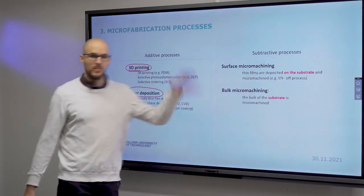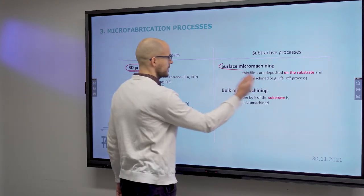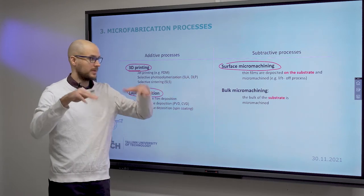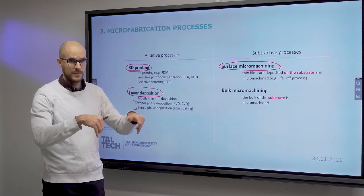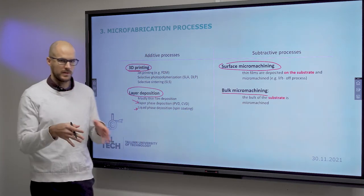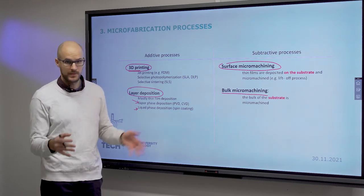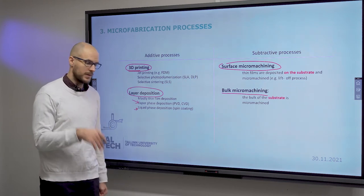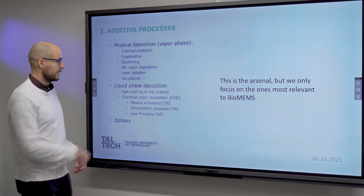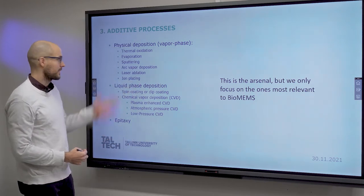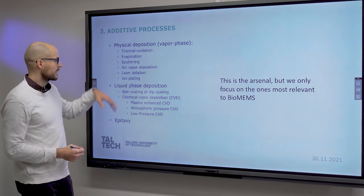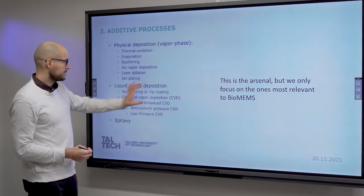Subtractive processes means you remove material. Surface micromachining would mean you work on the surface, on the level of the thin films that you deposited. Bulk micromachining means that you do not work in the layer of thin films. You work in the bulk, which is silicon or glass in our case.